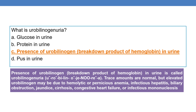What is urobilinogenuria? It is the presence of urobilinogen — a breakdown product of hemoglobin — in the urine. Trace amounts are normal, but elevated urobilinogen in urine may be due to hemolytic or pernicious anemia, infectious hepatitis, biliary obstruction, jaundice, cirrhosis, congestive heart failure, or infectious mononucleosis.